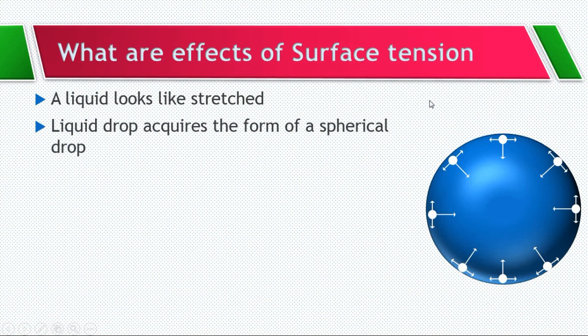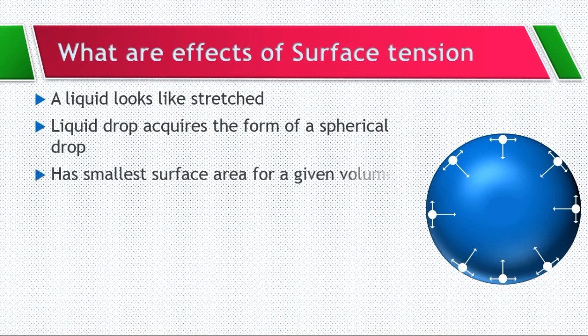Spherical drop shape is acquired by the liquid because in the spherical drop shape it has the smallest surface area for a given volume of liquid. That is why, because of surface tension, the liquid acquires that spherical shape.